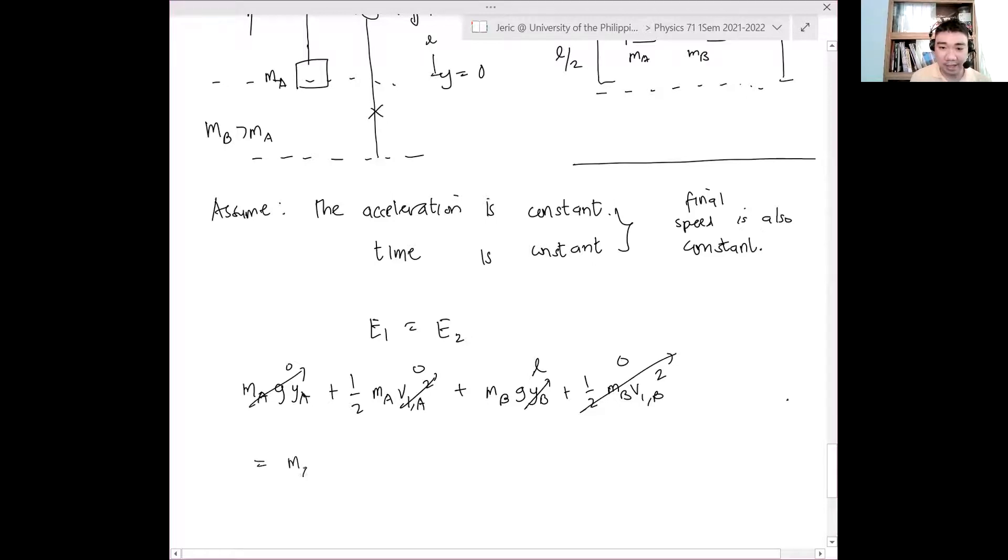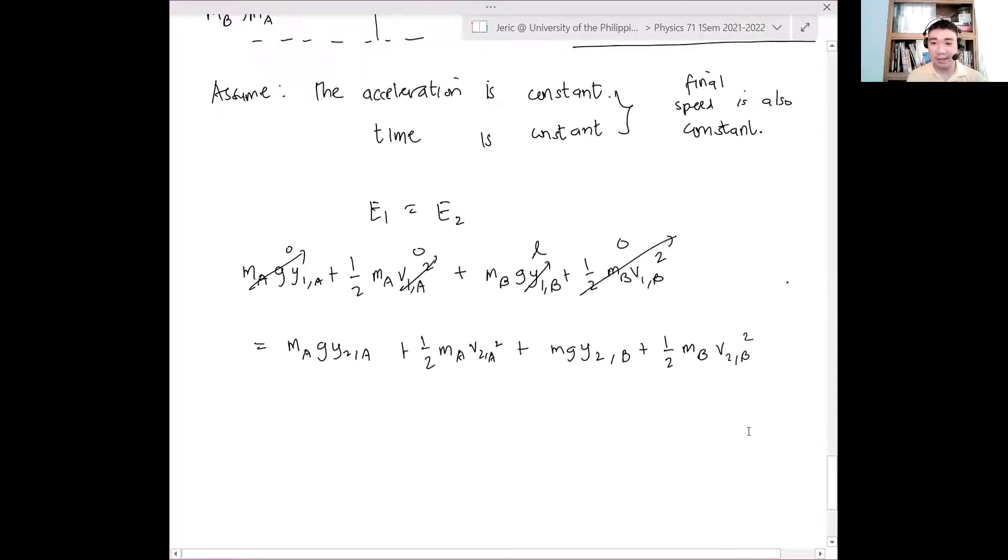Now E1 equals E2. So the initial state, you have mass MA. I will set my y equals 0 at the position of MA. Therefore there's no initial potential energy for MA. And there's no initial kinetic energy either. Remember they're both at rest before I cut the string. Therefore the initial kinetic energy is zero. But yB here is equal to L.